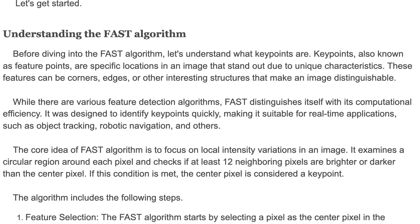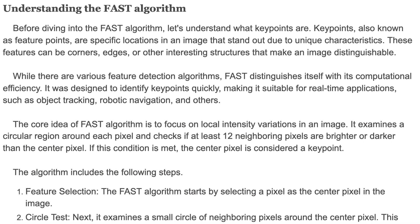Key points, also known as feature points, are specific locations in an image that stand out due to unique characteristics. These features can be corners, edges, or other interesting structures that make an image distinguishable. While there are various feature detection algorithms, FAST distinguishes itself with its computational efficiency. It was designed to identify key points quickly, making it suitable for real-time applications such as object tracking, robotic navigation, and others.